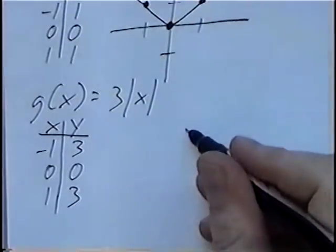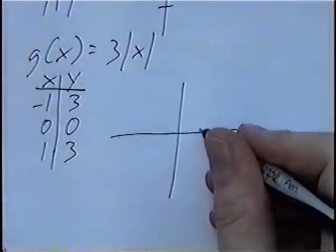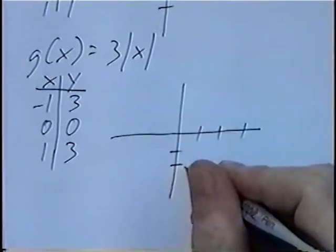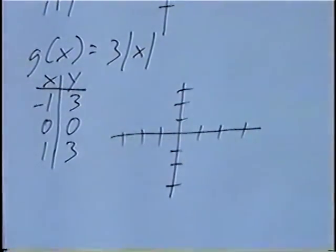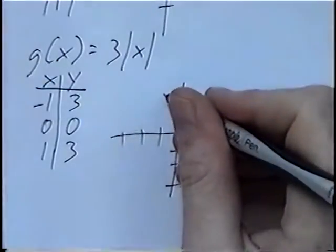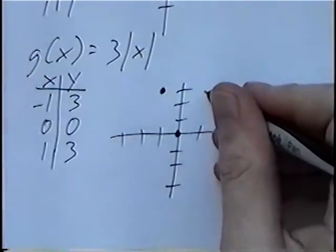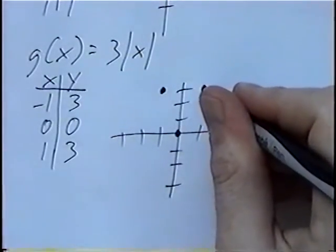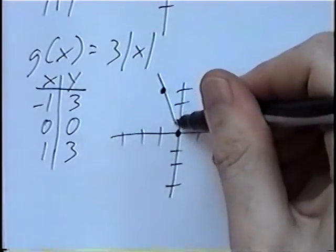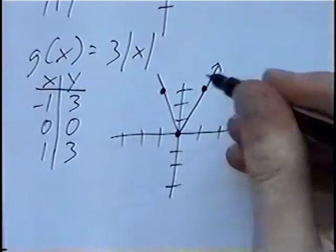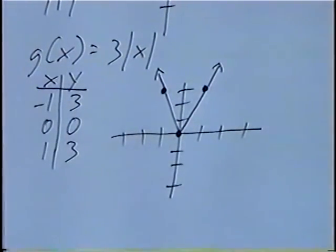Graph the points again on the xy-axis: negative 1, 3; 0, 0; and 1, 3. Again, the points should line up to make a v-shape. Every Absolute Value graph will be a v-shape. We'll connect them, and that will be the graph for the equation.